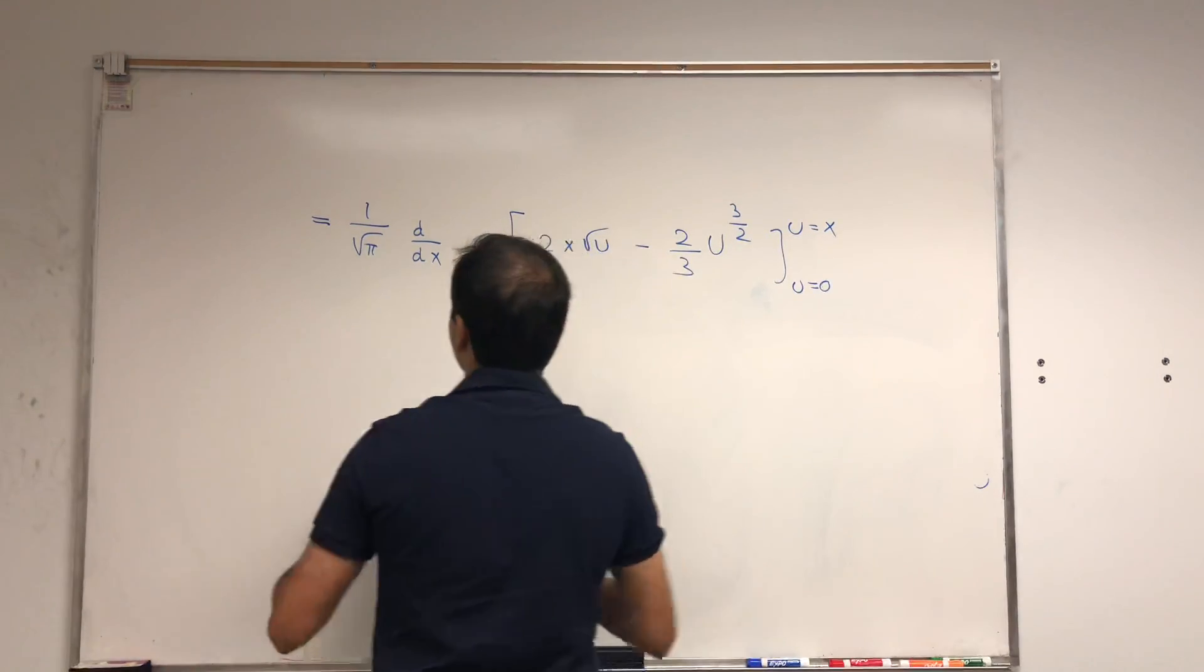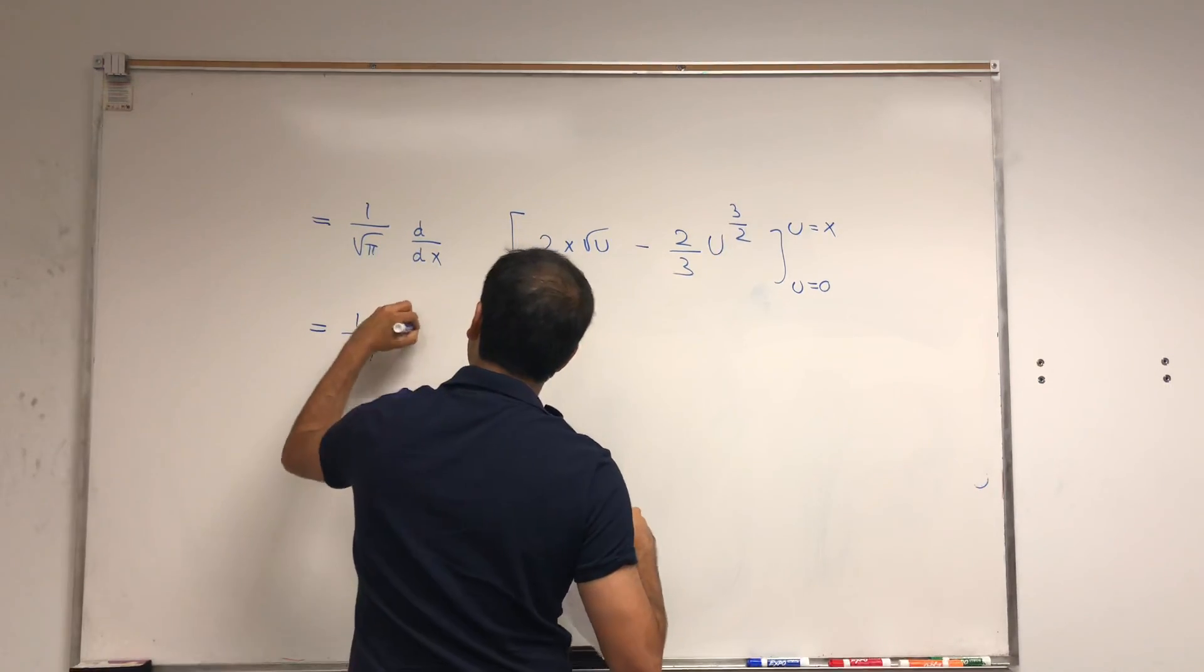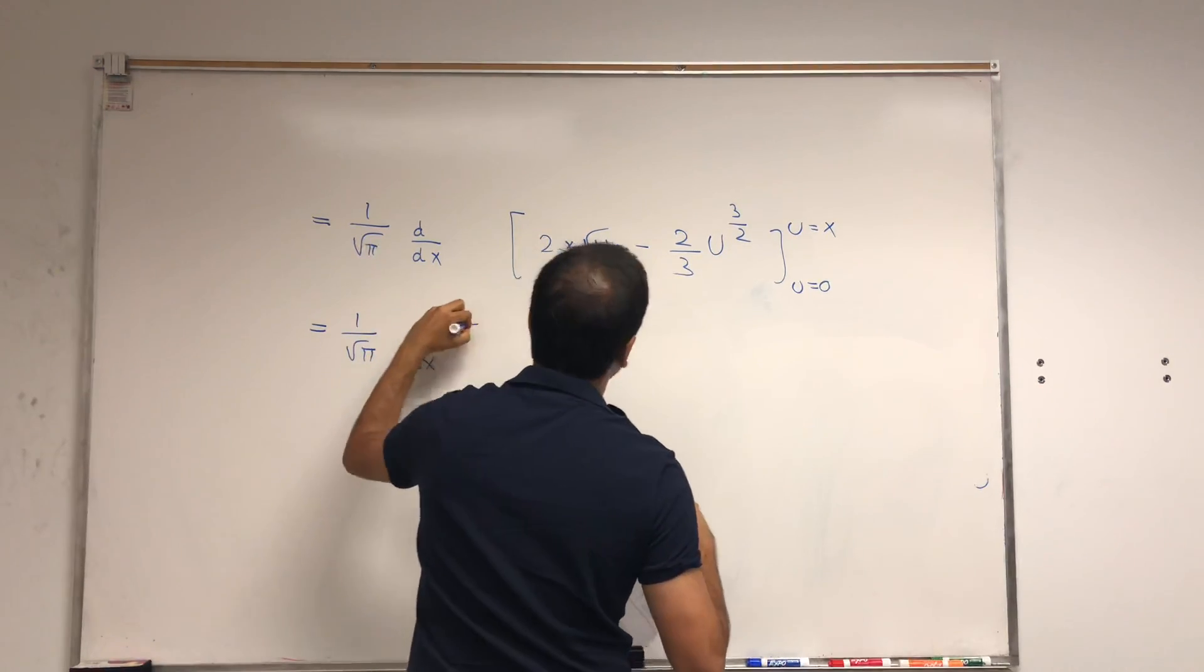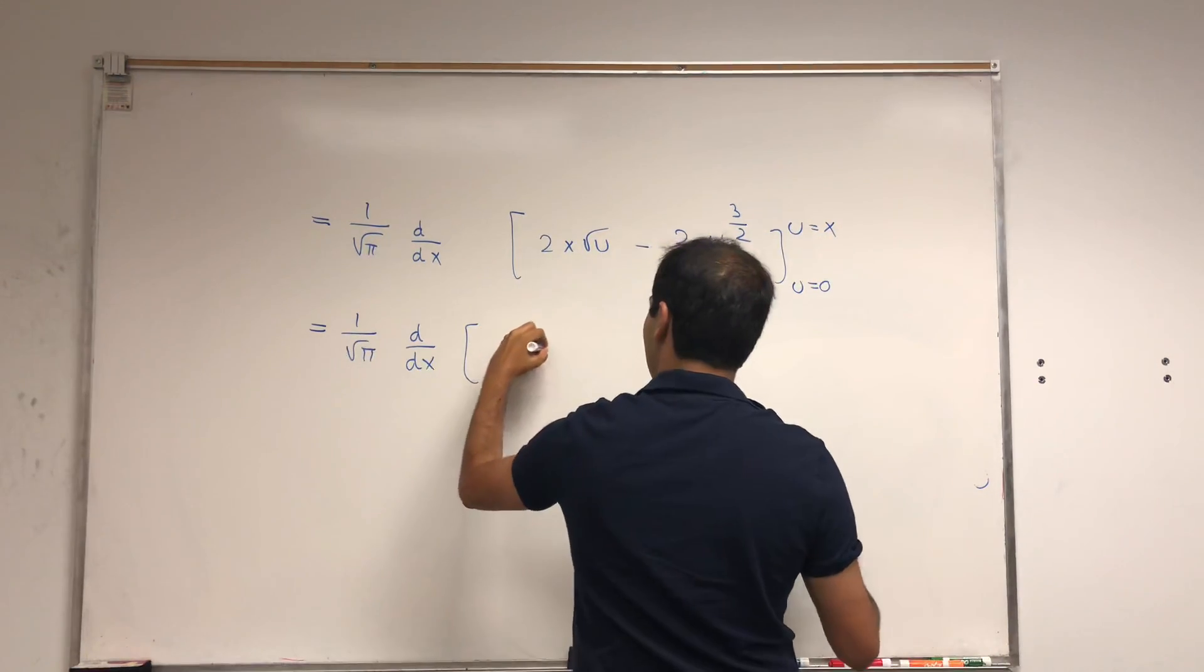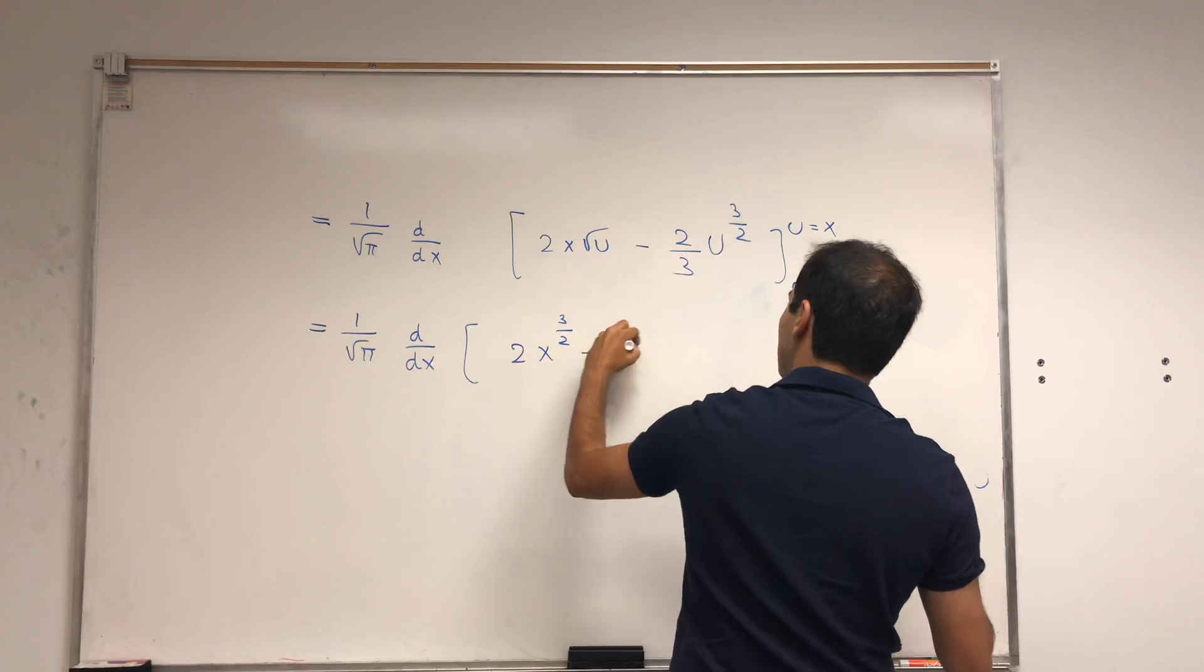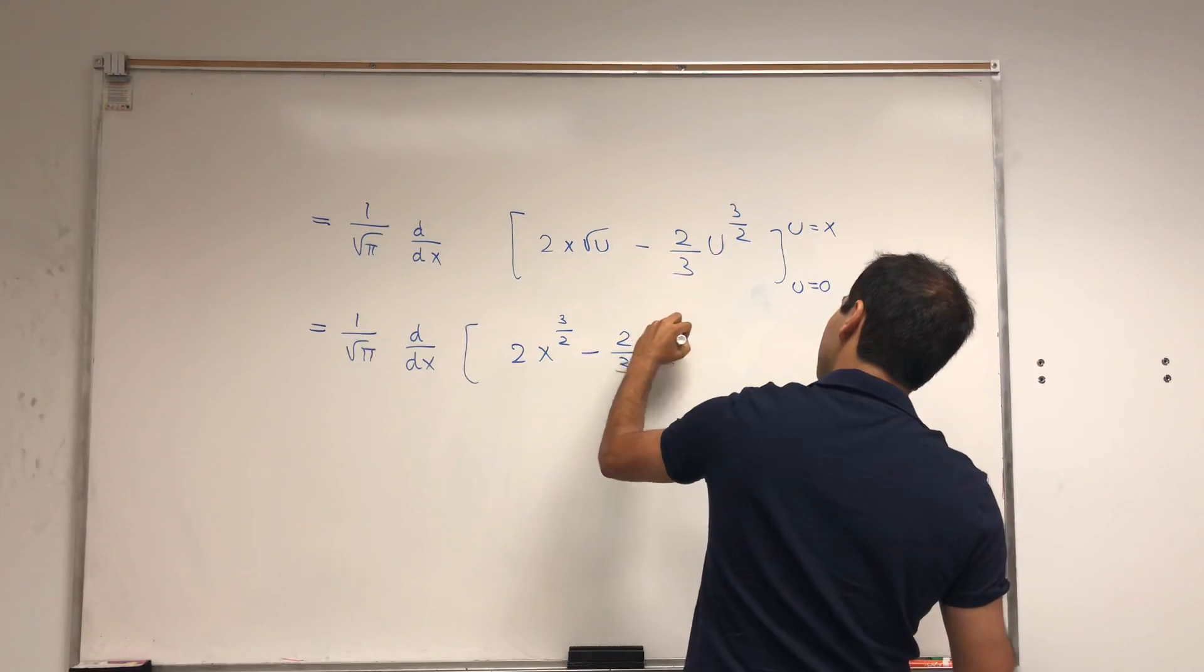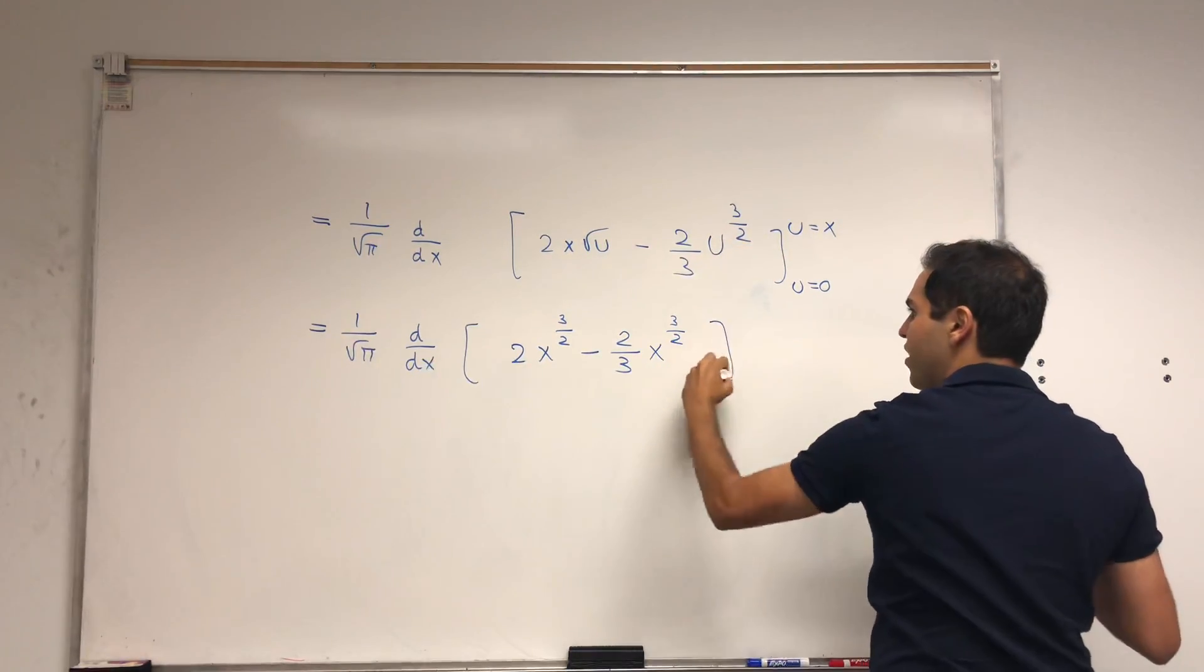And we get one over square root of pi, d over dx of, so 2x square root of x, so 2x to the three halves, minus two thirds x to the three halves, and then minus zero plus zero, which is zero.